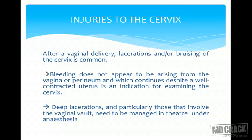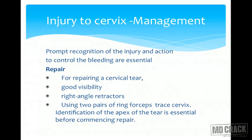After vaginal delivery, there can be lacerations or bruising to the cervix. Deep lacerations, particularly those involving the vaginal vault, should be managed in theatre under anaesthesia using right angle retractors and ring forceps or sponge holding forceps for good visibility. After every instrumental delivery — vacuum or forceps — it is mandatory to explore the cervix, a procedure called dressing of the cervix, because cervical trauma is common with instrumentation. Any trauma found should be repaired immediately.